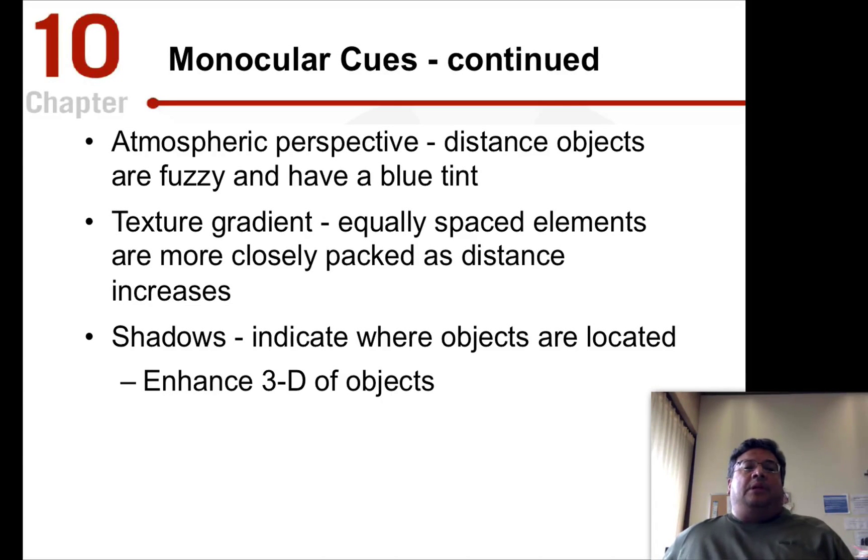Another type of monocular cue that we use is atmospheric perspective. So this is where objects that are up close, like a building for example, if you're standing looking at a building up close, you can see detail and colors in that building.